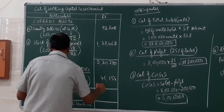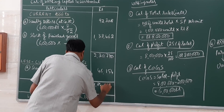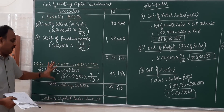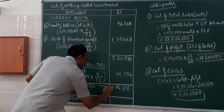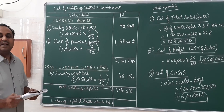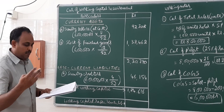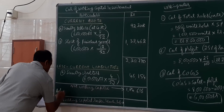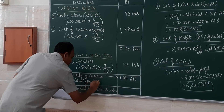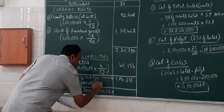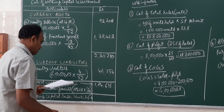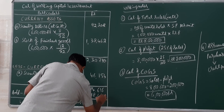Adding current assets total of 2,30,770 minus current liabilities of 46,154 gives net working capital — current assets minus current liabilities. We then have one more piece of information: allow 10% for contingencies. Contingencies are unexpected expenses we can't predict, so a 10% reserve is kept. Ten percent of the net working capital is calculated.